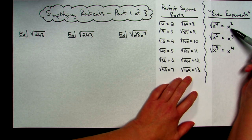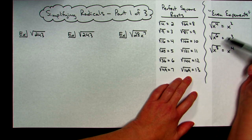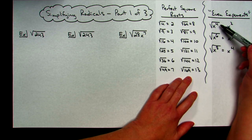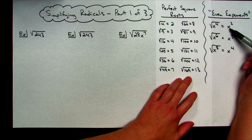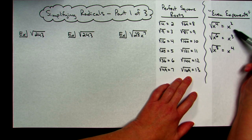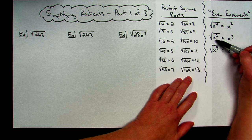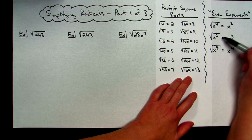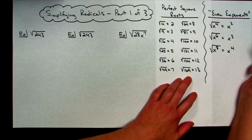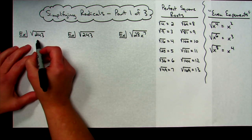Also written here: the square root of x to the fourth — any time I have an even exponent, it's just going to be x to the second. It will always be half of that exponent, due to laws of exponents, because x squared times x squared gives you x to the fourth. So square root of x to the sixth is x to the third, square root of x to the eighth is x to the fourth. Even exponents on variables are going to be very helpful.